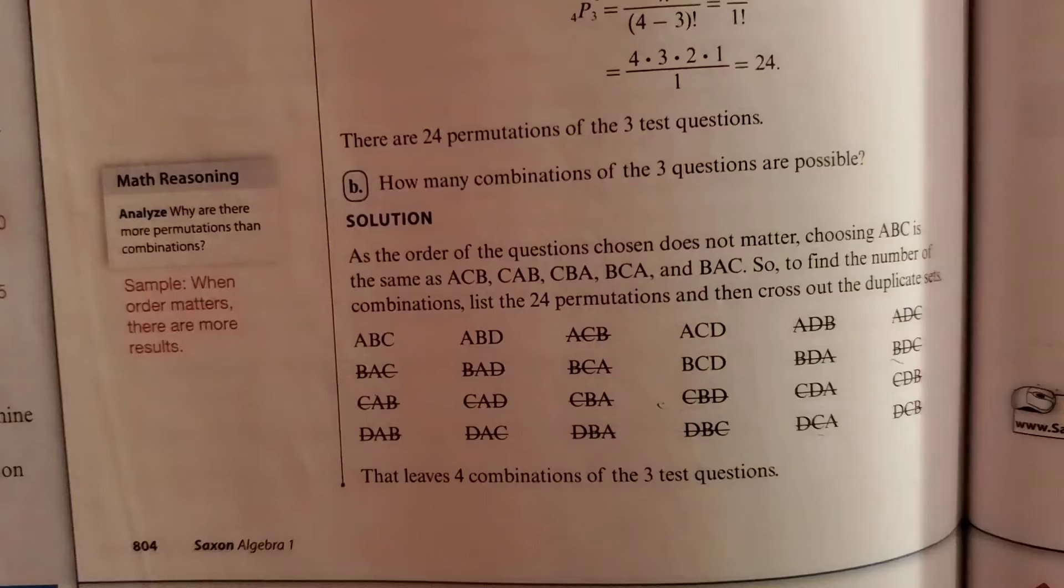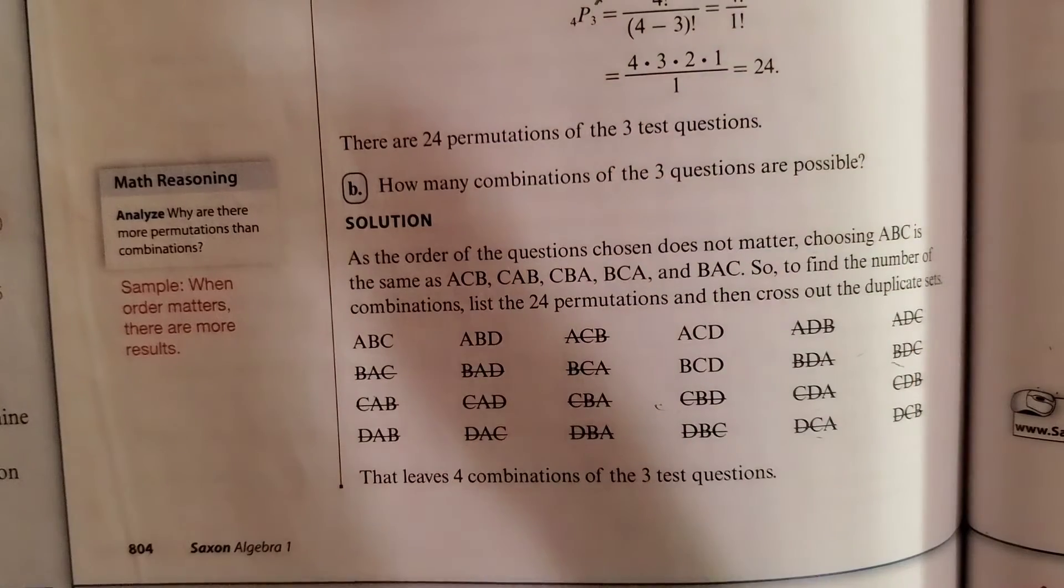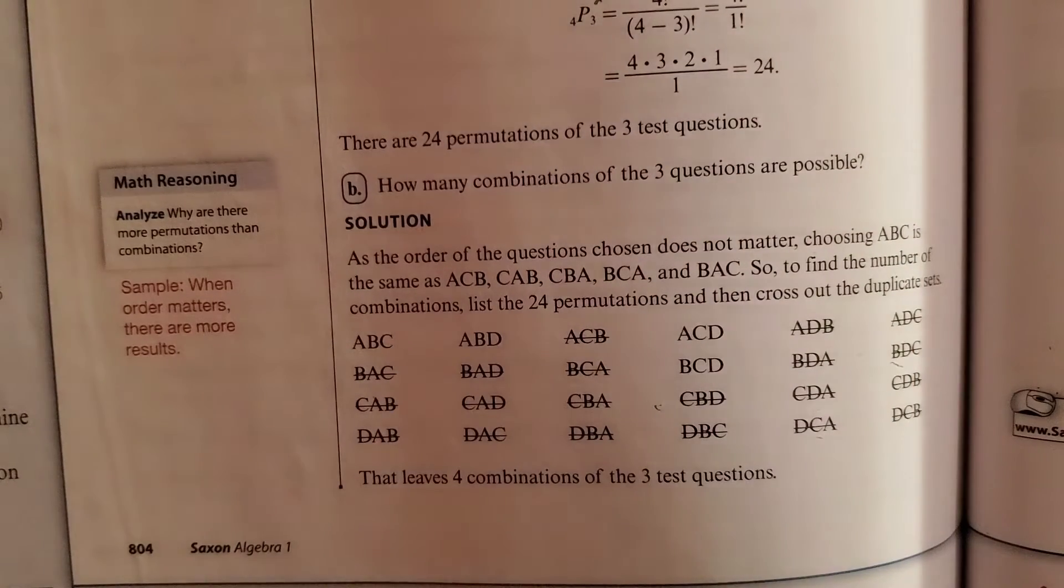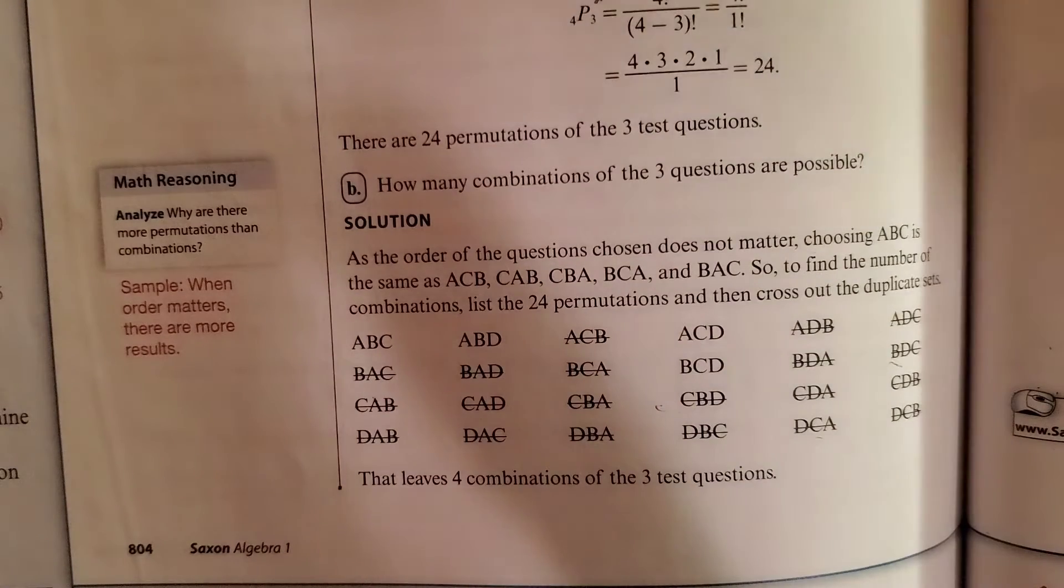So in here it asks, how many combinations of the three questions are possible? What they're saying is, how many different ways you can answer the test. But you have to understand something combinations. It's like pizza toppings, right? If you choose pepperoni, sausage, and bacon, it's the same thing as if you chose bacon, pepperoni, and sausage or pepperoni, bacon, and sausage or sausage, pepperoni, bacon, or whatever you want to do is the same thing. It doesn't really matter. And so that's very important because that's the difference between a permutation and a combination.